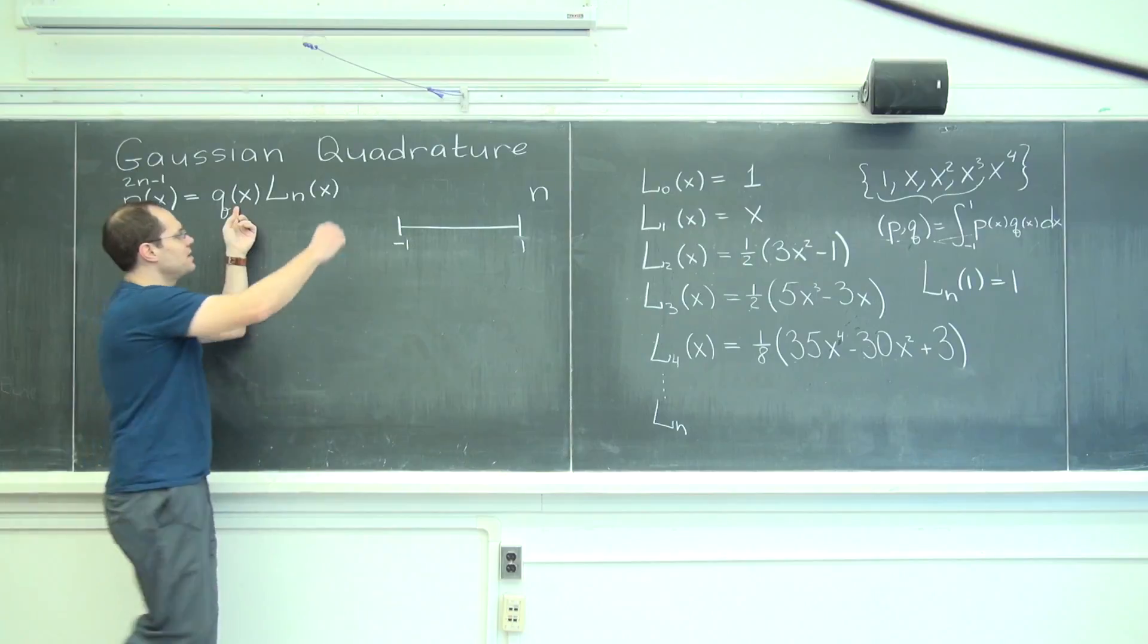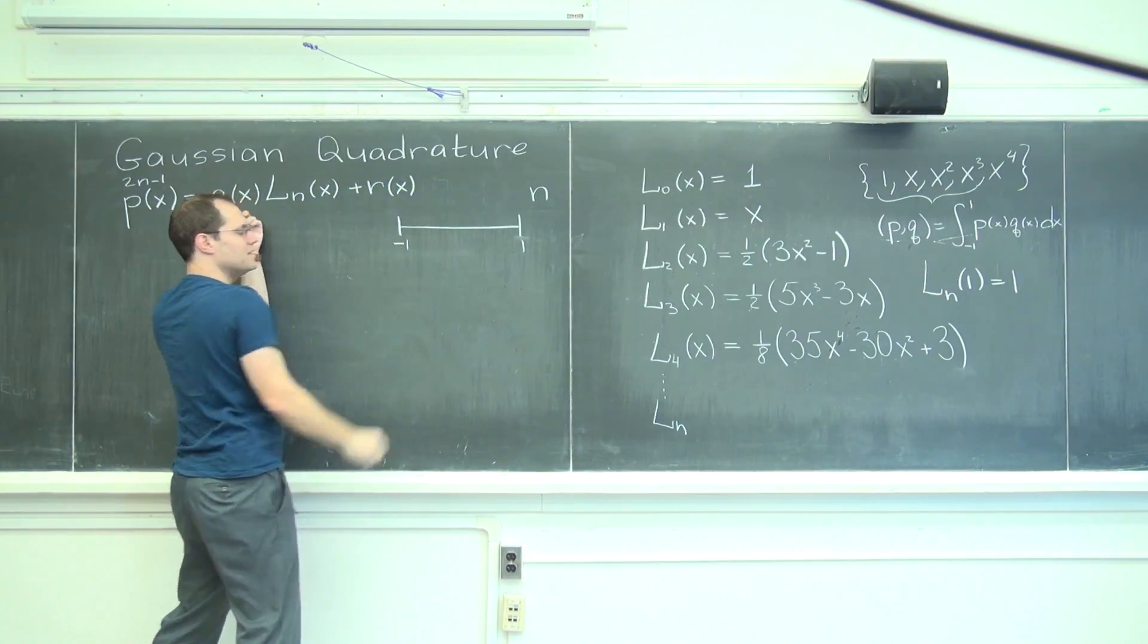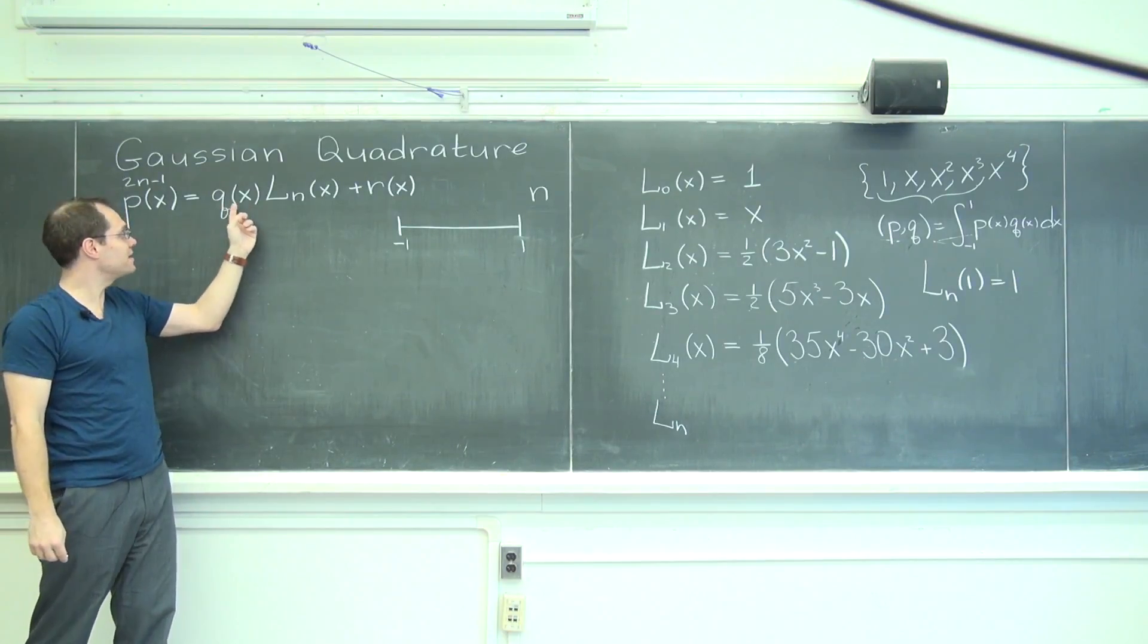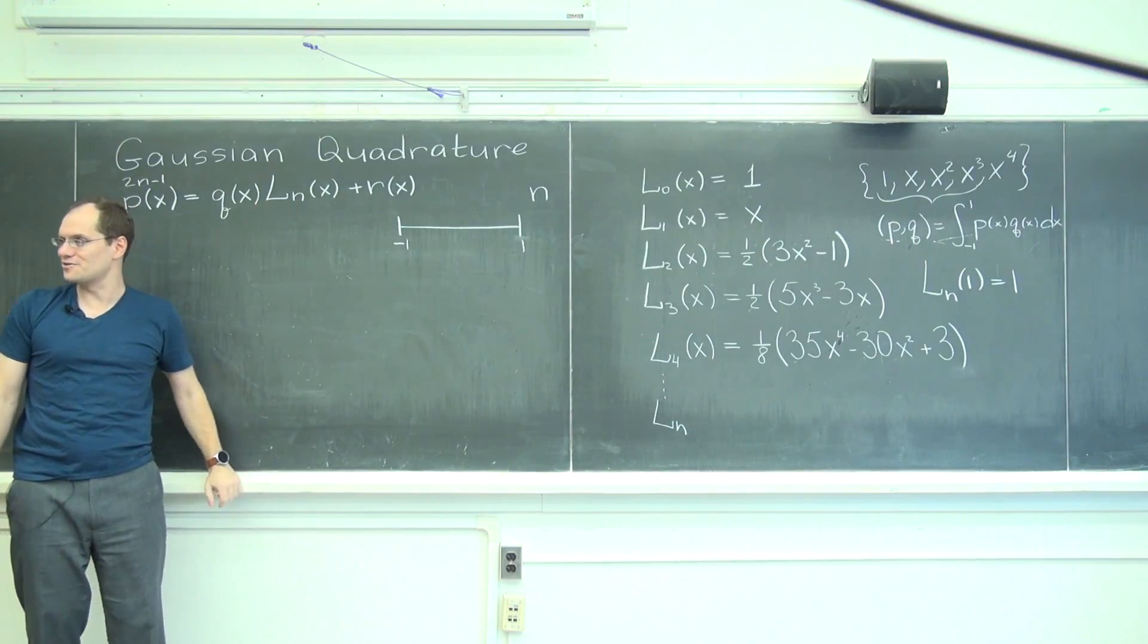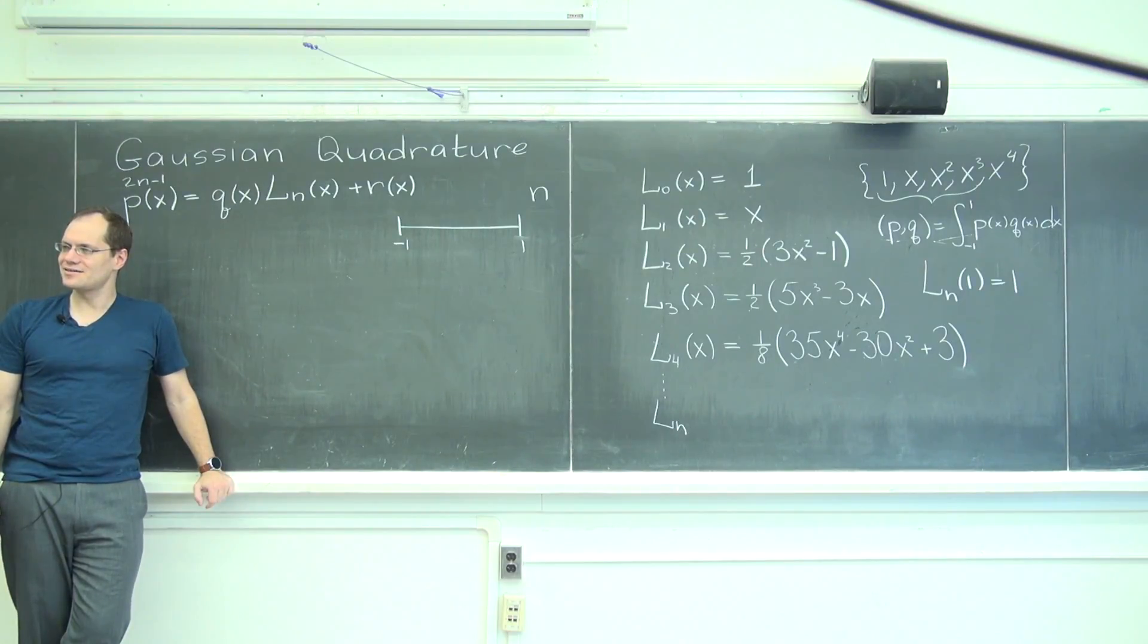plus the remainder, which will be of degree n minus 1, right? I'm dividing by nth degree, also n minus 1 or less. Funny how they both have the same maximal degree. Okay, we're almost there. We don't even need half an hour.